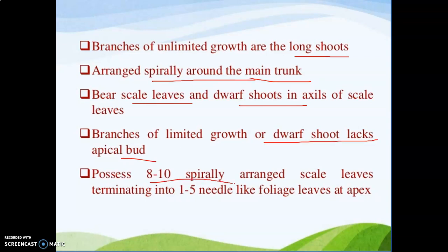Dwarf shoots possess 8 to 10 spirally arranged scale leaves and terminate into 1 to 5 needles. Dwarf shoots are of limited growth because after a certain growth they get converted into needle-like leaf structures. The number of needles in one dwarf shoot ranges from 1 to 5, depending on the species. For example, Pinus roxburghii has 3 needles — trifoliate; Pinus wallichiana has 5 needles — pentafoliate.